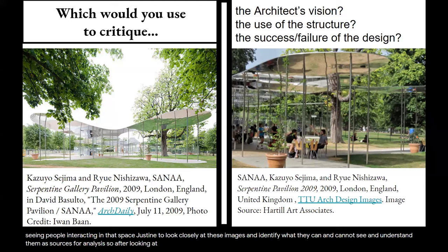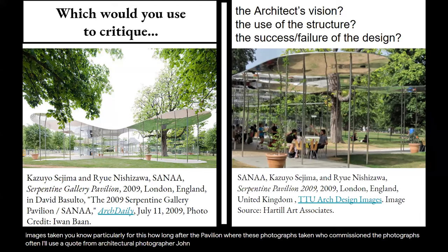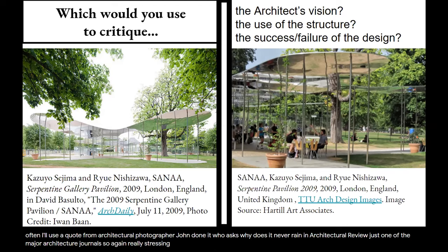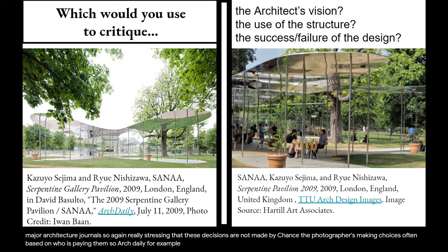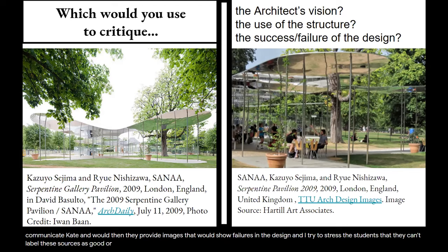After looking and questioning, I direct students to think about the creation process. When were these images taken? Who commissioned the photographs? I often use a quote from architectural photographer John Dunnett, who asks: 'Why does it never rain in Architectural Review?' — one of the major architecture journals. These decisions are not made by chance. Photographers make choices often based on who is paying them. ArchDaily generally receives images provided by the architect's firm, so what are they trying to communicate? Would they provide images that show failures in the design? I stress to students that they can't label these sources as good or bad, but rather must understand what biases they have and question whether they may still fit their need.